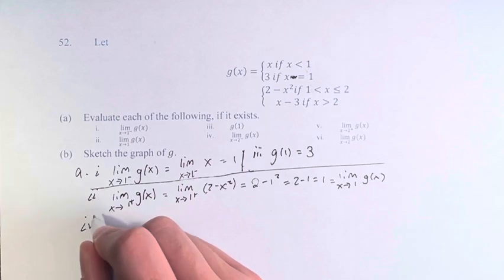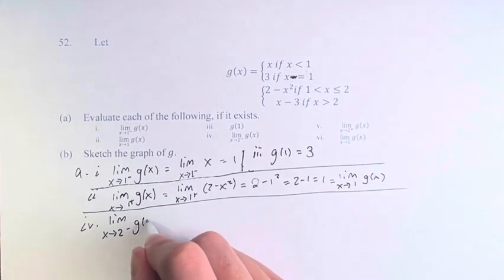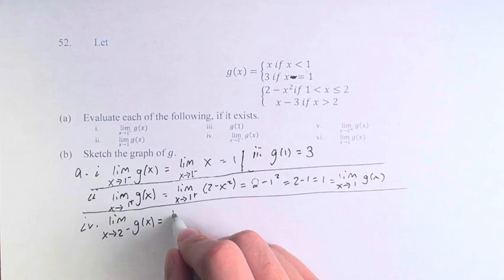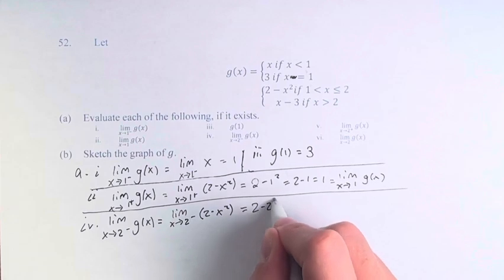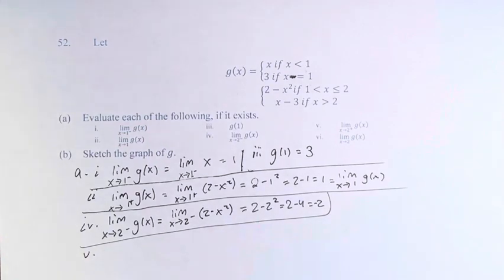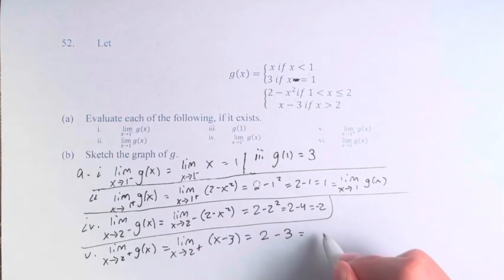And then for part 4, we have the limit as x approaches 2 from the left of g(x). So these are values of x that are approaching 2 but less than 2. We're going to use the part of the piecewise function for x greater than 2, x minus 3. We can plug in 2 to get 2 minus 3, which is negative 1.